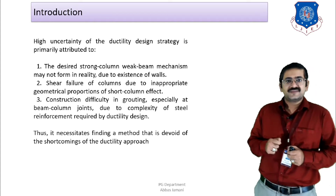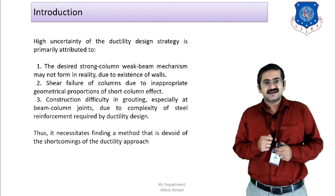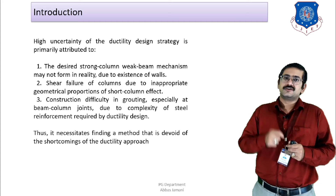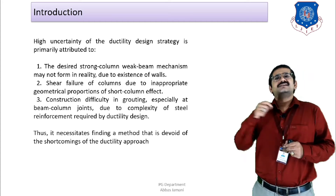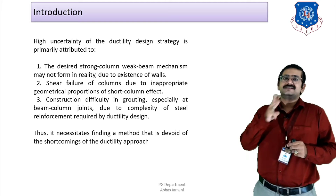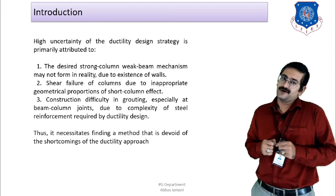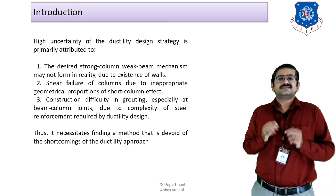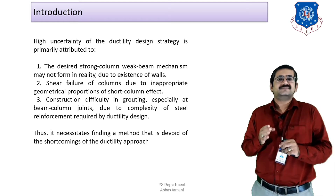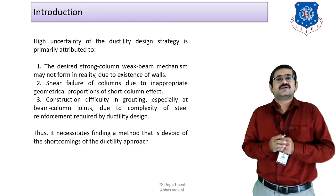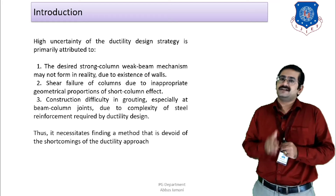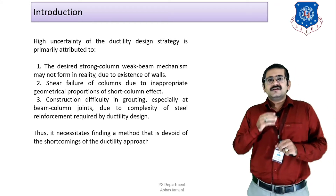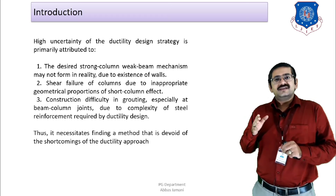What are the possible reasons that, despite discussing the necessity of ductile detailing and following all the clauses in the detailing part, ductile behavior cannot be achieved on site? There are three reasons attributed here. The first reason is the strong column weak beam theory — the assumption that the size of the column should always be greater than that of the beam so that the stiffness of the column is greater, and failure remains local rather than global.